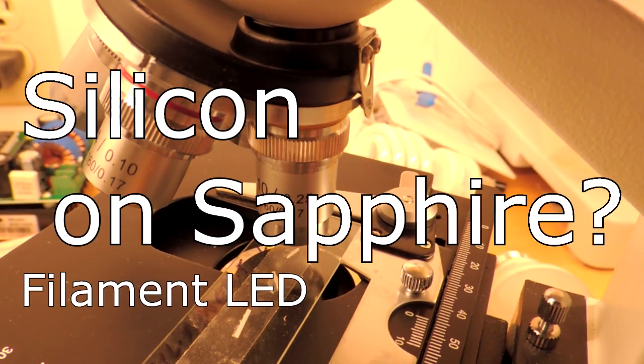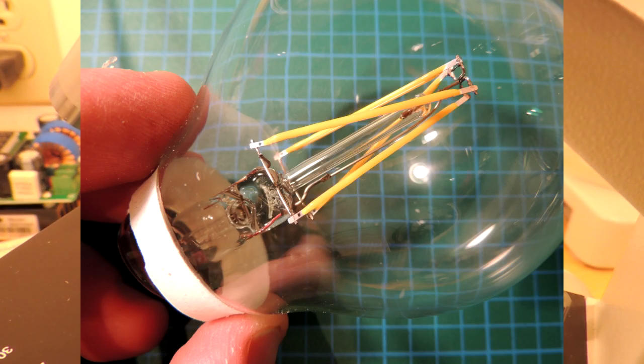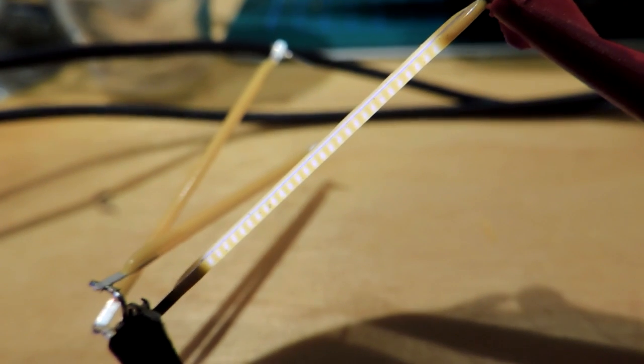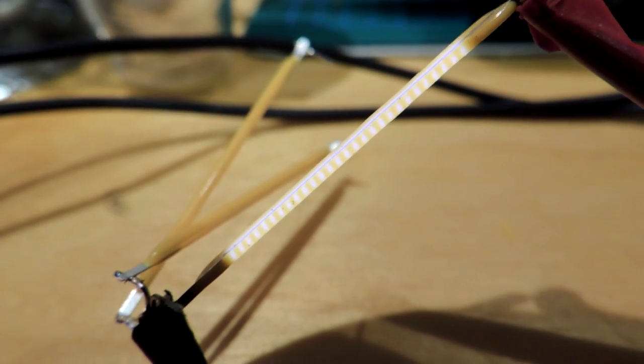Silicon on sapphire sounds pretty exotic. Yeah, it probably is. A while back I took apart a filament LED light bulb. Let me just inset the picture of it. And when you break it apart and extract it, you get these little yellow strands.